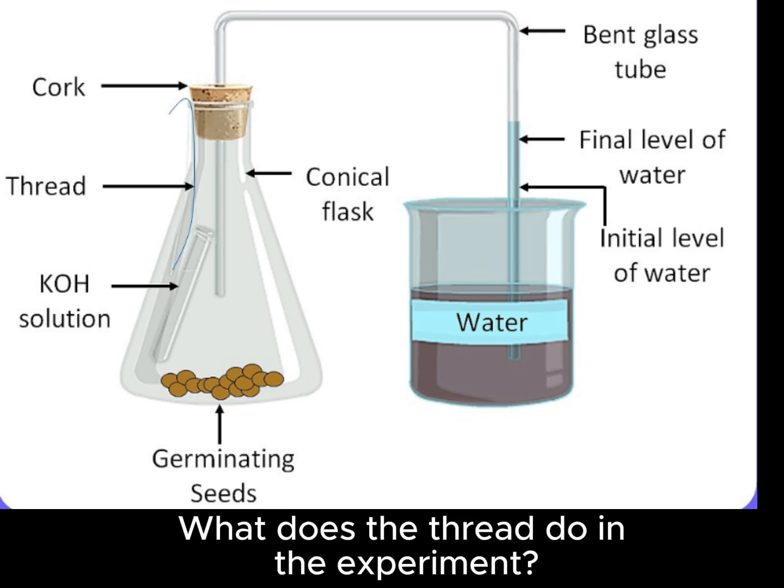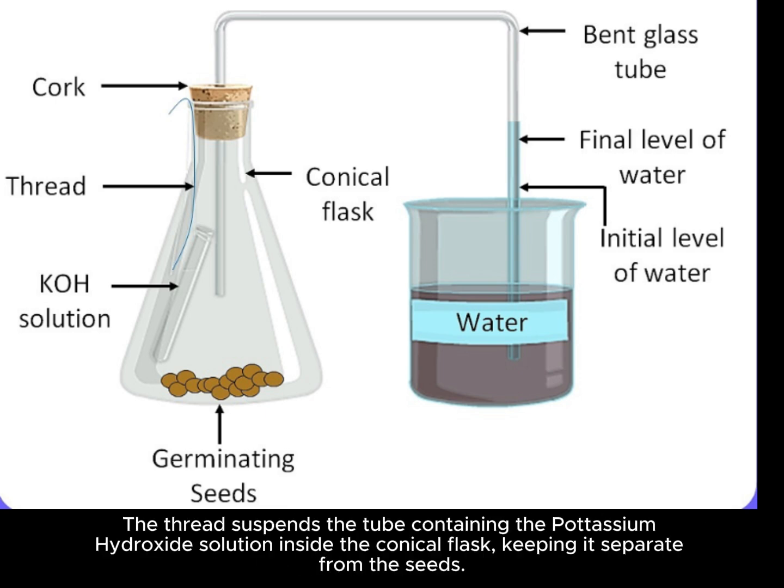What does the thread do in the experiment? The thread suspends the tube containing the potassium hydroxide solution inside the conical flask, keeping it separate from the seeds.